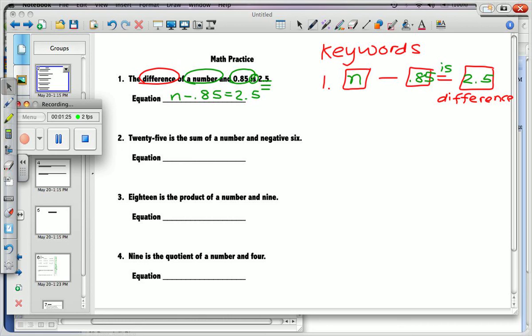And so when you solve, what you're going to do is do the inverse operation, which means the opposite. I'm going to add 85 hundredths to both sides. When I add decimals, I line them up according to the decimal point. So then therefore, n is equal to, and I'll fill in gaps of zeros. This is 3.35. 3 and 35 hundredths.